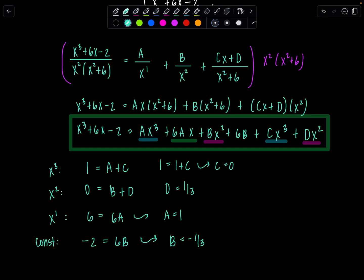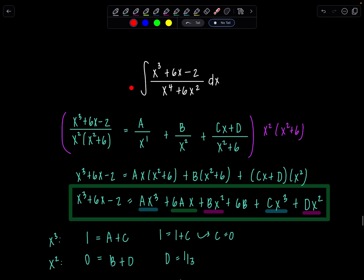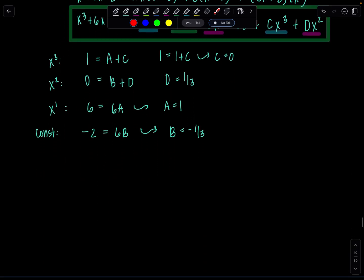So now that I have all of the constants A, B, C, D, I'm going to go back, substitute them in here to the partial fraction decomposition, and rewrite my integrand using the partial fraction decomposition. So now we have, let's see here, integral.